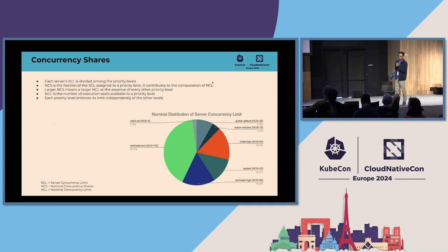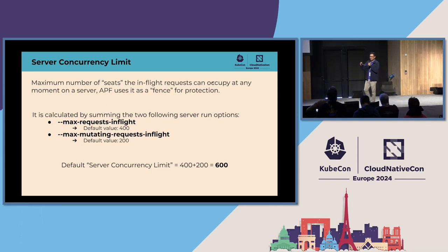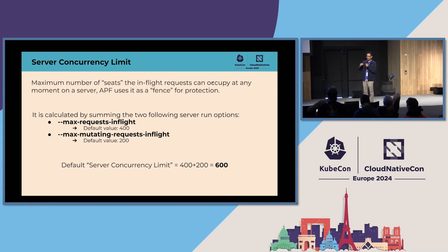Regarding guidance on how much to tweak the number of seats available — the default is 600 — we're still trying to find that answer, because this is a very rough approximation. When we say APF uses this as a fence for protection, it's definitely not an accurate fence. You can use the number of cores to map to this value and run experiments to see how well it performs. It also depends on your workload, since not all workloads act similarly on the APF server side — requests have different costs.